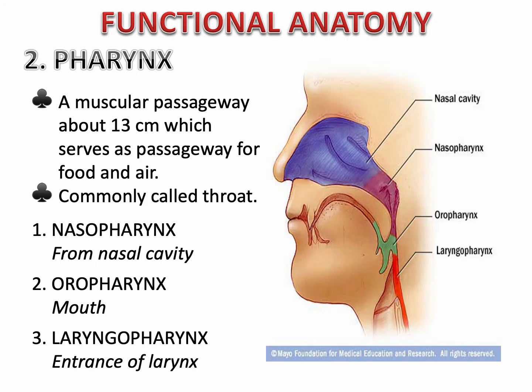Another structure is the pharynx. The pharynx is a muscular passageway about 13 cm long and serves as a passageway for food and air — commonly called the throat. There are three areas: the nasopharynx, the oropharynx, and the laryngopharynx. The nasopharynx from the nasal cavity is for air entry. The oropharynx is an entry for air, food, and fluid. The laryngopharynx, near the entrance of the larynx, should only have air passing through.